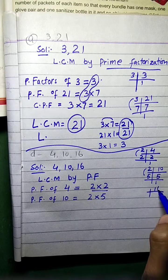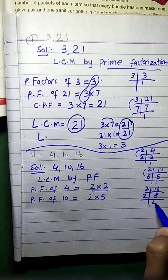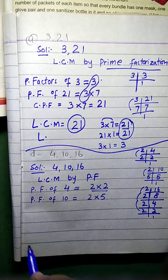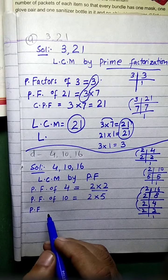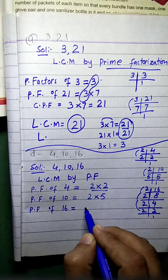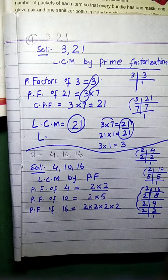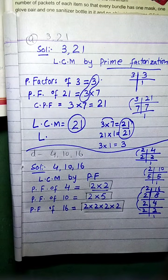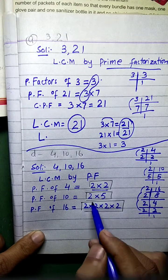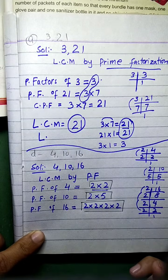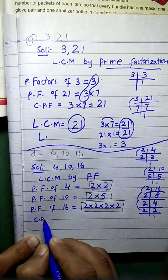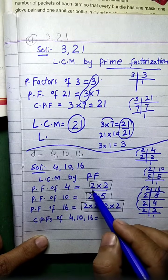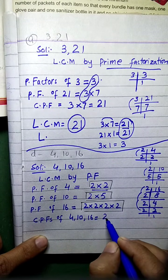Now for 16: 2 times 8 equals 16, 2 times 4 equals 8, 2 times 2 equals 4, 2 times 1 equals 2. So prime factors of 16 is equal to 2 multiply 2 multiply 2 multiply 2. Now we have the prime factors of 4, 10, and 16. We identify the common prime factors of 4, 10, and 16 — the common factor is 2.